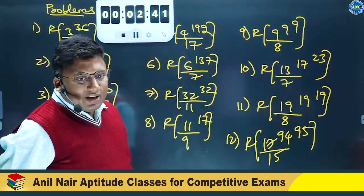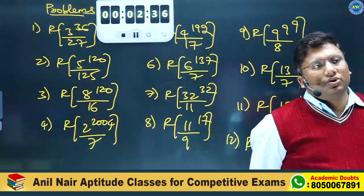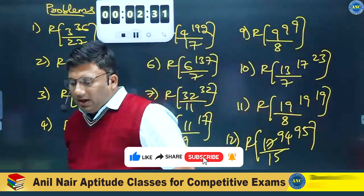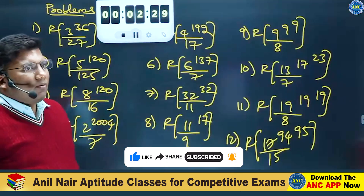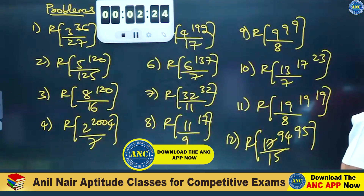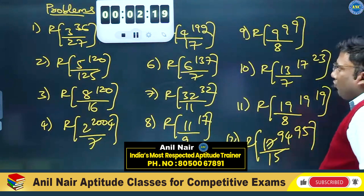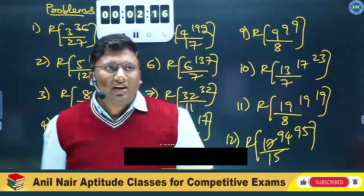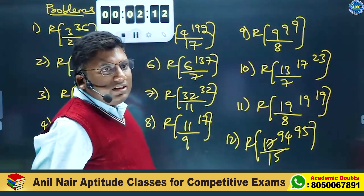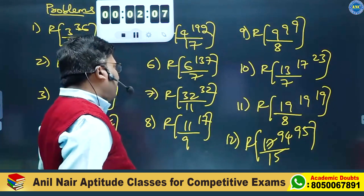Let me try to explain the problems. 3 power 36 divided by 27, 5 power 120 divided by 125, 8 power 120 divided by 16, 2 power 2004 divided by 7, 4 power 192 divided by 17, 6 power 137 divided by 7, 32 power 32 divided by 11, 11 power 17 divided by 9.